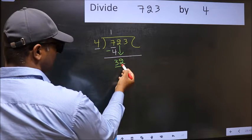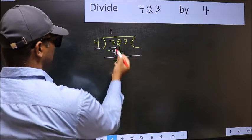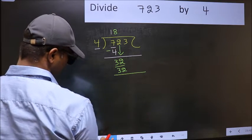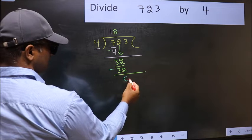Now 32. A number close to 32. When do we get 32 in 4 table? 4 eights, 32. Now you should subtract. 32 minus 32, 0.